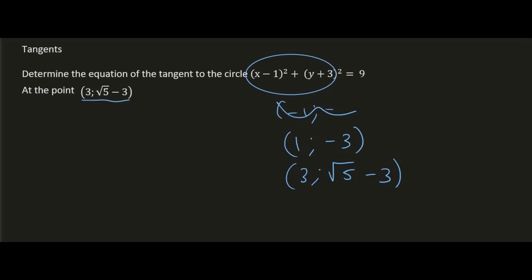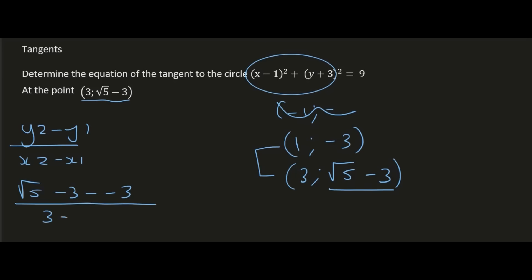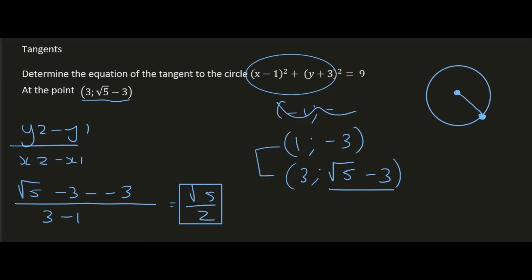We need to find the gradient from the center to the point where the tangent touches, using (y₂ - y₁) / (x₂ - x₁). That's (√5 - 3 - (-3)) / (3 - 1), which gives us √5 / 2. So that is the gradient from the center to the point where the tangent touches. The center is here, and we have the point on the edge of the circle with that gradient.